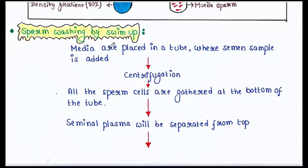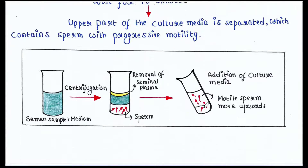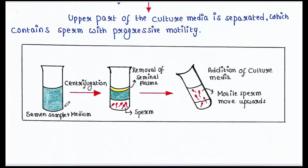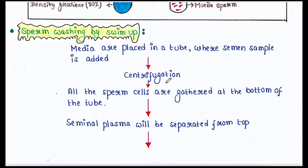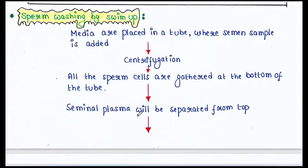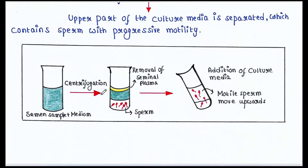Next is sperm washing by swim-up. In this technique, media are placed in a tube and the semen sample is added, so the tube contains semen sample plus medium. The next stage is centrifugation, after which all sperm cells are gathered at the bottom of the tube.